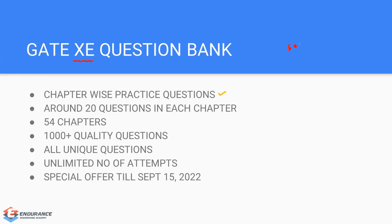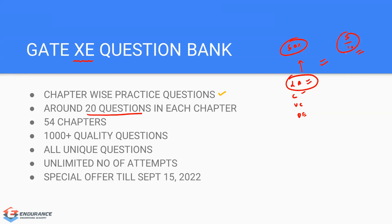Each chapter will contain around 20 questions — it can go up to 25 or 30, but approximately 20. If you can attempt 50% of the questions properly, your preparation is in the right direction. I'm asking you to solve just 5 out of 10 questions correctly. If you can do that, your preparation is correct — the remaining five, even if you make mistakes or don't know, you don't need to worry.